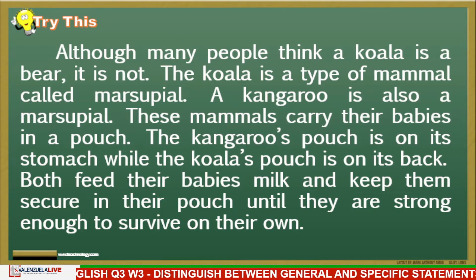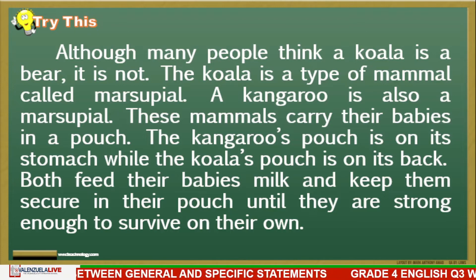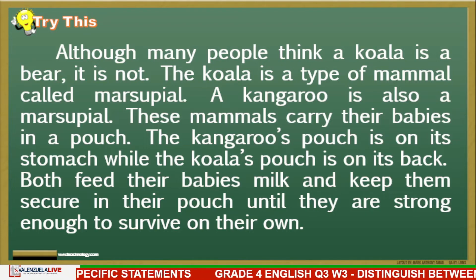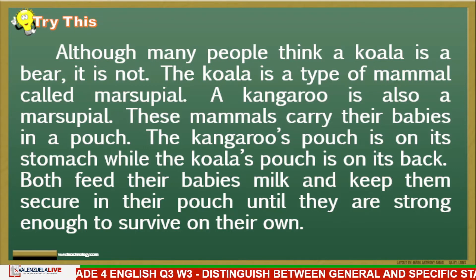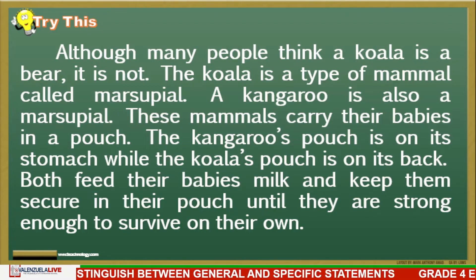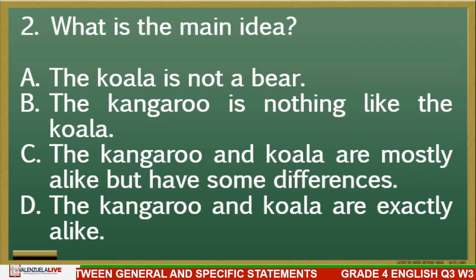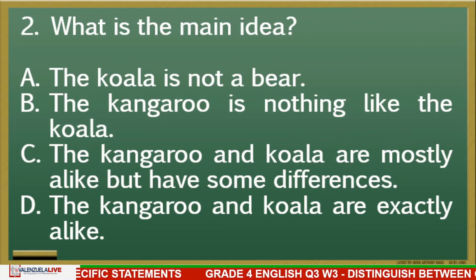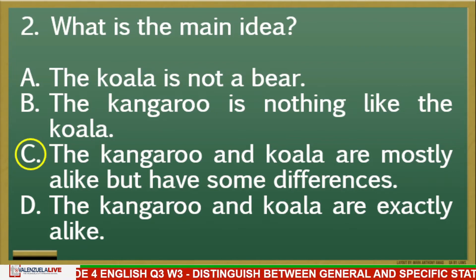Second paragraph: 'Although many people think a koala is a bear, it is not. The koala is a type of mammal called marsupial. A kangaroo is also a marsupial. These mammals carry their babies in a pouch. The kangaroo's pouch is on its stomach while the koala's pouch is on its back. Both feed their babies milk and keep them secure in their pouch until they are strong enough to survive on their own.' What is the main idea — A, B, C, or D? It's letter C: The kangaroo and koala are mostly alike but have some differences.